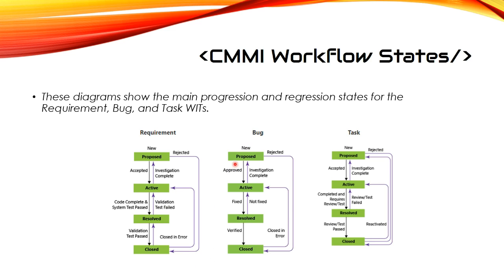For a Bug: when new it is Proposed, then Active, then Resolved, then Closed — just like the Requirement. If it's closed it can go back to Active; if rejected it goes to Closed. For a Task: the states are Proposed, Active, Resolved, and Closed. If the task is closed it can go back to Proposed or back to Active. If the task is rejected, it can go from Proposed directly to Closed.